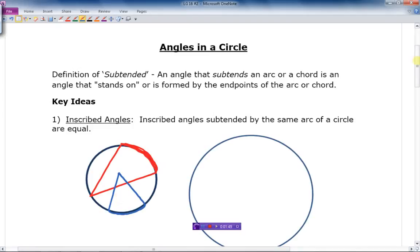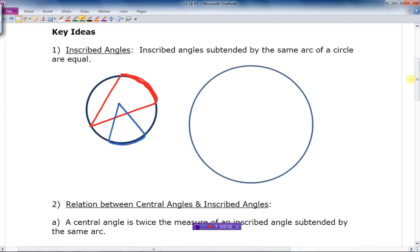So let's get on to the key ideas now. And the first key idea is inscribed angles. And it says here inscribed angles subtended by the same arc of a circle are equal. So if I drew an angle, let's just once again draw another angle here. If I'm going to draw an angle like this and like that. And I drew another angle that starts and ends at the same place on the circle.